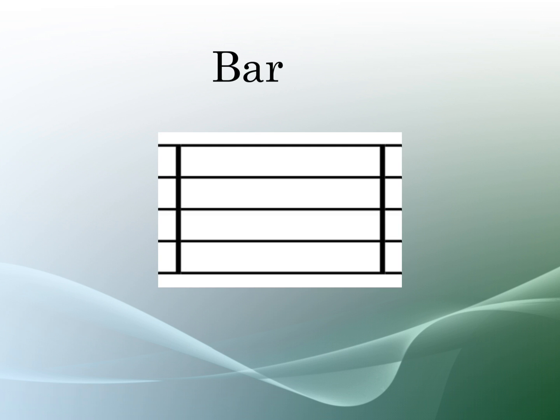A bar is a unit of a specific number of beats, which depends on the time signature. At the end of each bar there is a bar line to make sure that the bars are separate and distinct from each other.